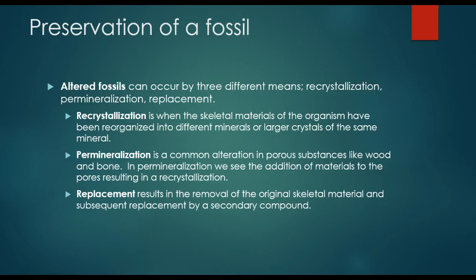Altered fossils can occur by three different means: recrystallization, permineralization, or replacement. Recrystallization is when the skeletal materials of the organism have been reorganized into different minerals or larger crystals of the same mineral. Permineralization is a common alteration in porous substances like wood and bone. In permineralization, we see the addition of materials to the pores resulting in recrystallization, as we see in petrified wood. Replacement results in the removal of the original skeletal material and subsequent replacement by some secondary compound.